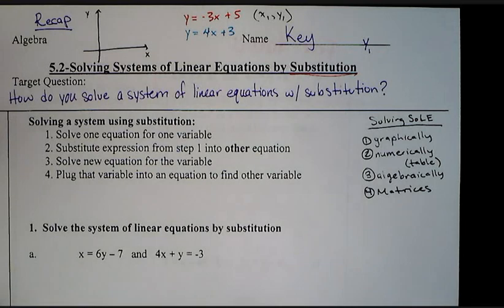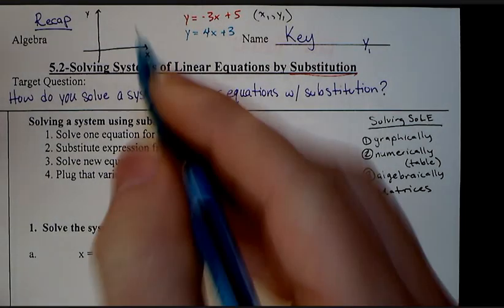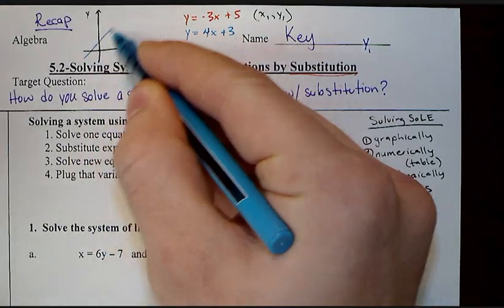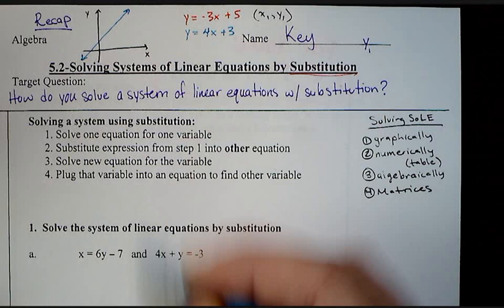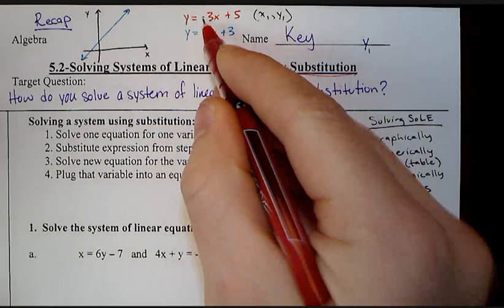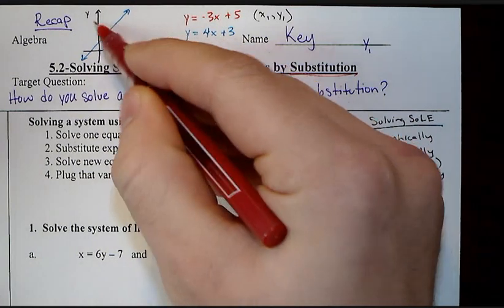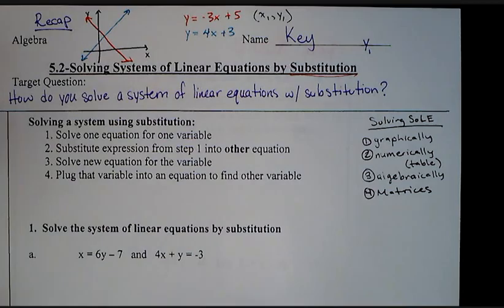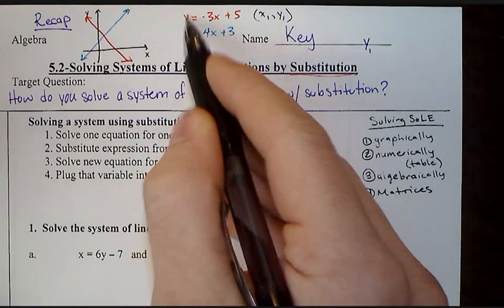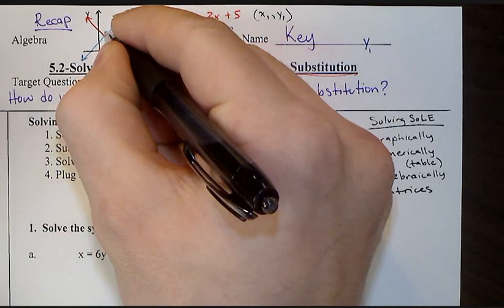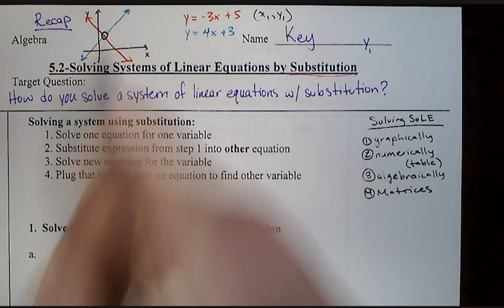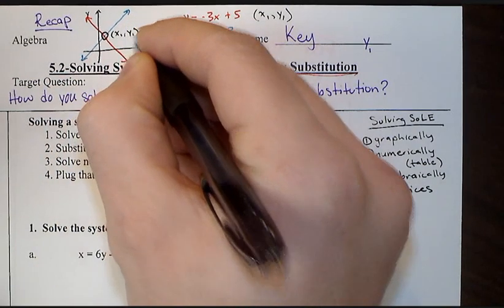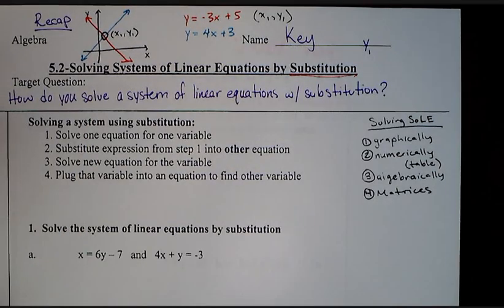Yesterday we went over how we could find these graphically. I'm just going to eyeball it. Let's say that's my blue equation right here, my second one. This one has a negative slope going here. We found out that exactly where these two lines intersect is our solution to this system of linear equations right there.